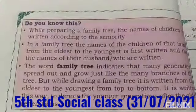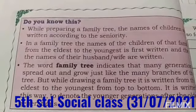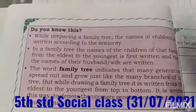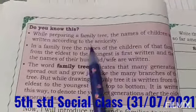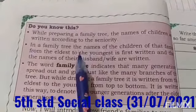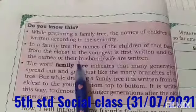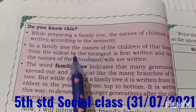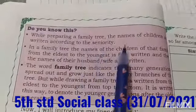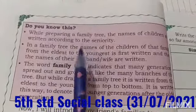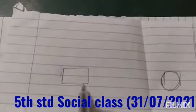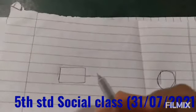In a family tree, the names of the children of that family are written from the eldest to the youngest first, and then the names of their husband or wife are written beside them. So when you are writing the names of children, you have to write the eldest one first. Here, if you write the eldest one in this box, beside that you have to write the husband or wife of that member. So it is important to write the oldest one first, and then beside that you have to write the names of their husband or wife.